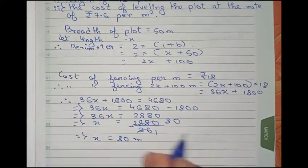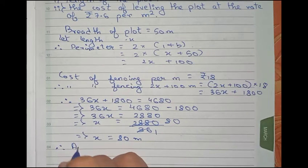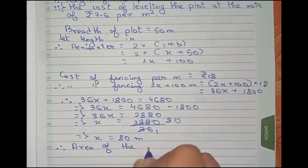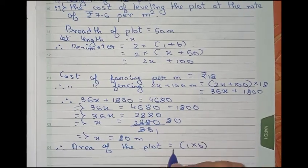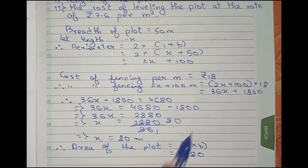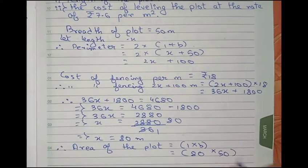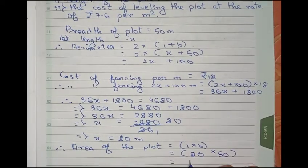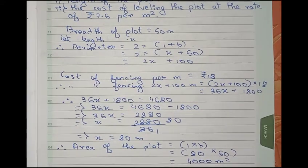Now we can find the area. Area of the plot equals length times breadth, so it will be 80 times 50 meters, which equals 4000 meter square. This is our area.